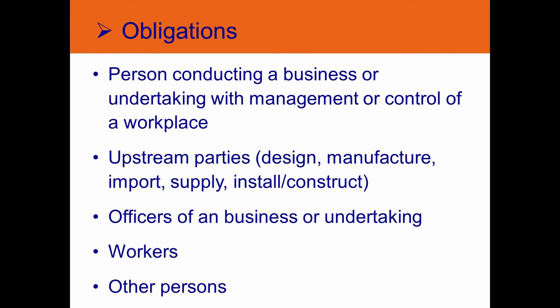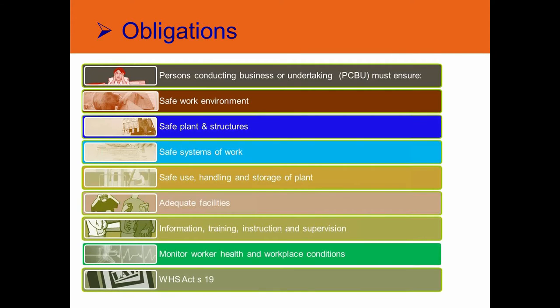In terms of obligations, there are several duty holders: upstream parties — think of putting in an air conditioning plant, someone's got to design, manufacture, import, supply, install, and construct it. Officers within your organisation can have an obligation. Workers have an obligation, as well as other persons. Running your eye down the slide, you've got to create a safe work environment, safe plant and structures, safe systems of work, safe use, handling and storage of plant, adequate facilities for workers, and — more importantly — provide information, training, instruction and supervision. In some cases, you must also monitor workplace health conditions, for example when working with lead.